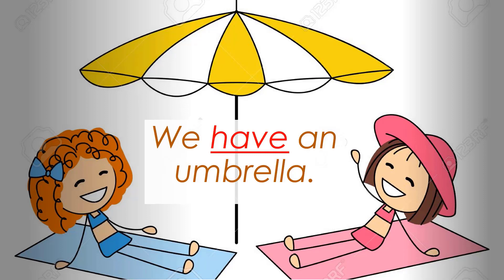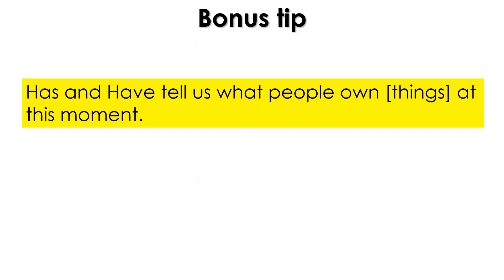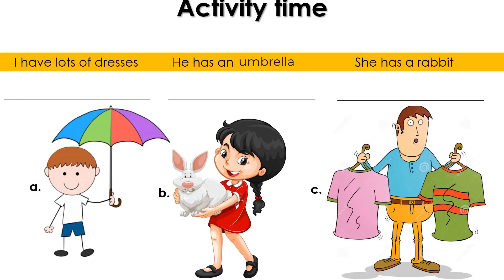Now it's time for the bonus tip. 'Has' and 'have' tell us what people own at this moment. So whenever we use 'has' or 'have' in a sentence, we come to know what things a person is having right now, at this moment.